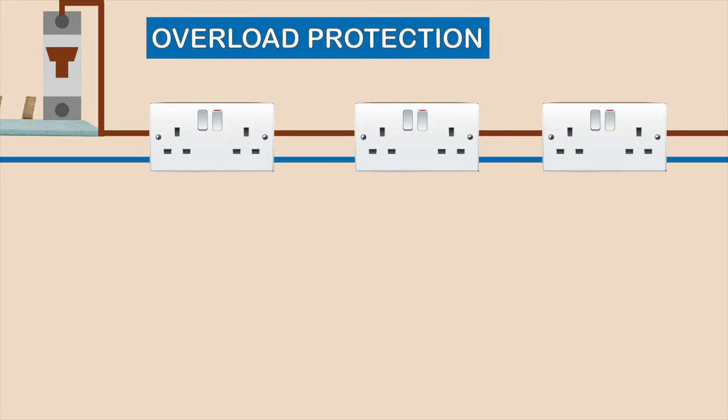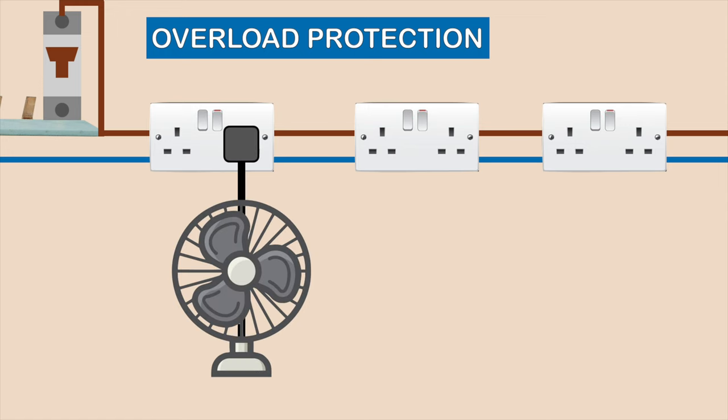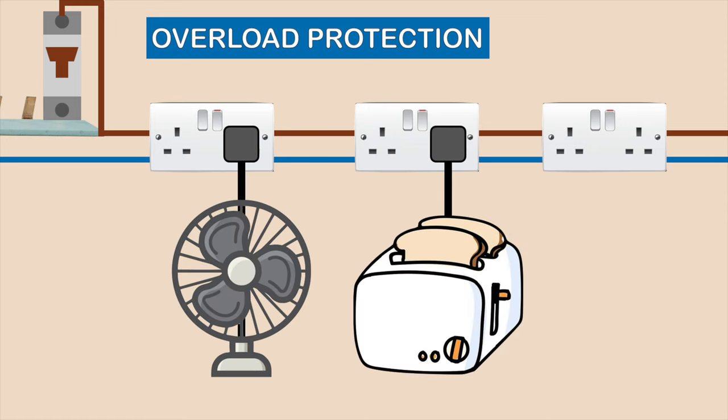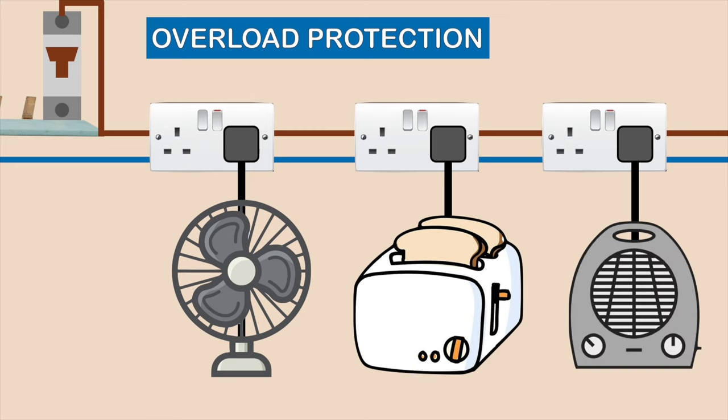The MCB is rated to have a certain amount of current going through it. If this value is exceeded on a circuit — for example by plugging in too many appliances — the MCB will trip. This will protect the cable on that circuit, preventing the cable from overheating and potentially stopping a fire.